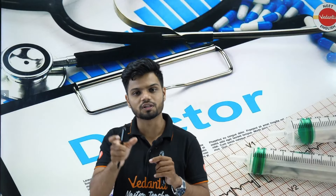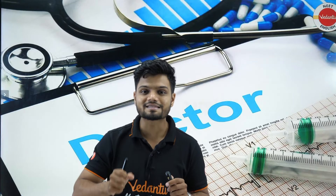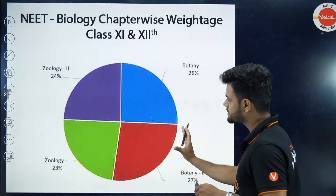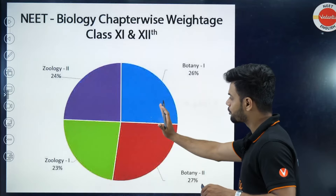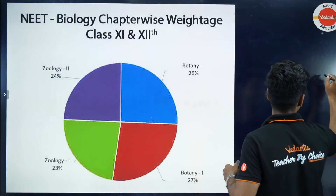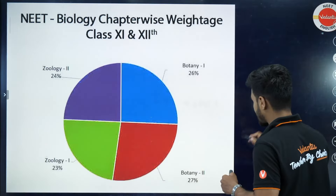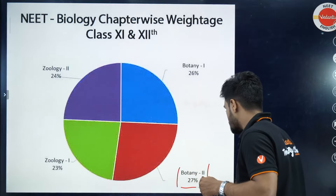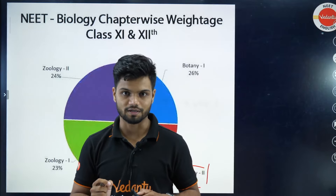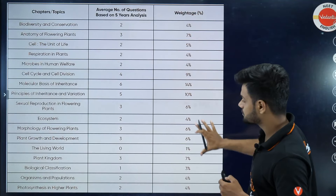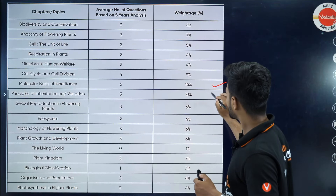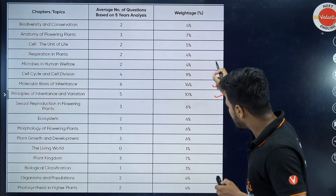This video is based on the last five year analysis. Before we start, let me tell you the botany and zoology difference — botany is actually much higher weightage compared to zoology, especially Class 12 botany, which has two main chapters: Principles of Inheritance and Molecular Basis of Inheritance. When you look at the chapter-wise botany breakdown, Principles and Molecular Basis have the highest weightage.